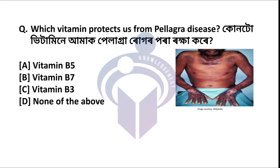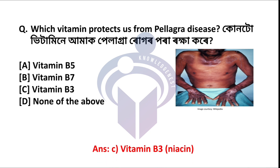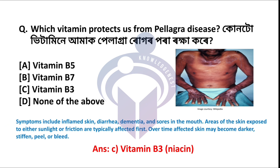Next question: Which vitamin protects us from pellagra disease? The correct answer is option C: Vitamin B3, also known as niacin. A deficiency of niacin causes pellagra, whose symptoms include skin rash, diarrhea, dementia, mouth sores, and weakness. In severe cases, those affected can die from the disease.